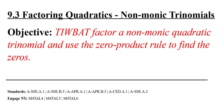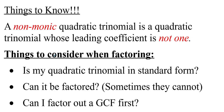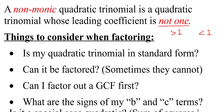So let's jump right into our things to know. A non-monic quadratic trinomial is a quadratic trinomial whose leading coefficient is not one — meaning it can be greater than one and it can also be less than one. So any number bigger than one or less than one, which could mean a fraction.